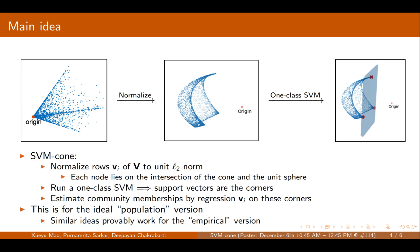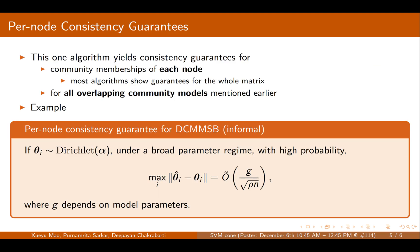This case is for the ideal population version, but similar ideas probably work for the empirical version. We can show this one algorithm yields consistent guarantees for community memberships of each node, while most algorithms show guarantees for the whole matrix. Our guarantee works for all overlapping community models mentioned earlier.